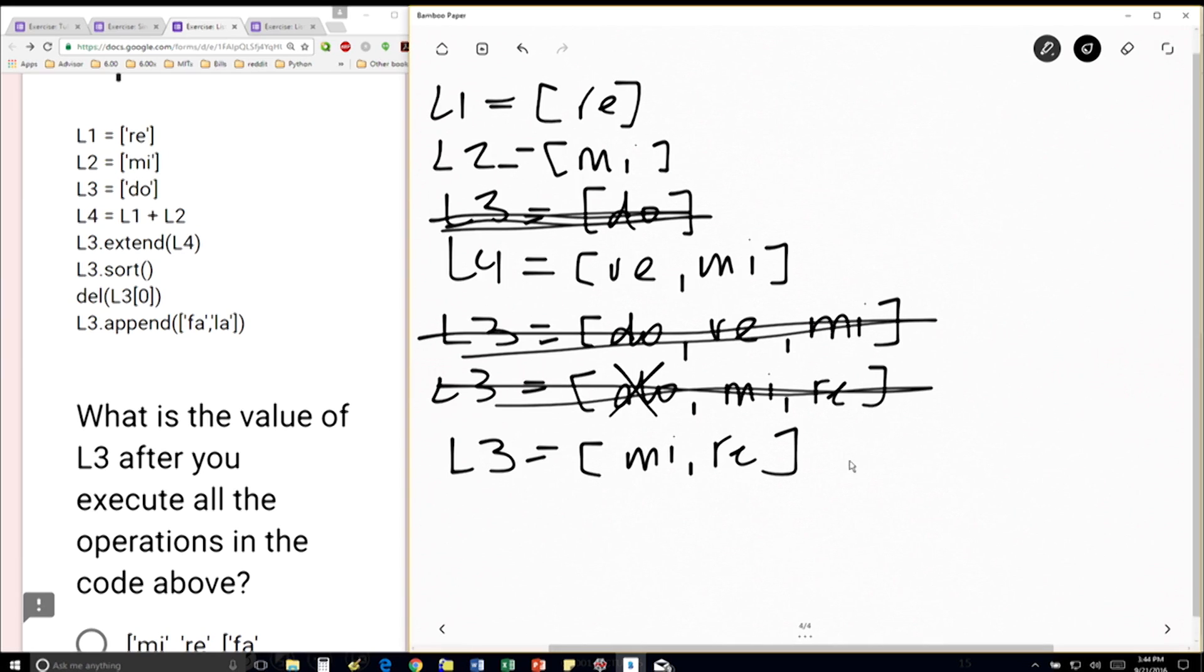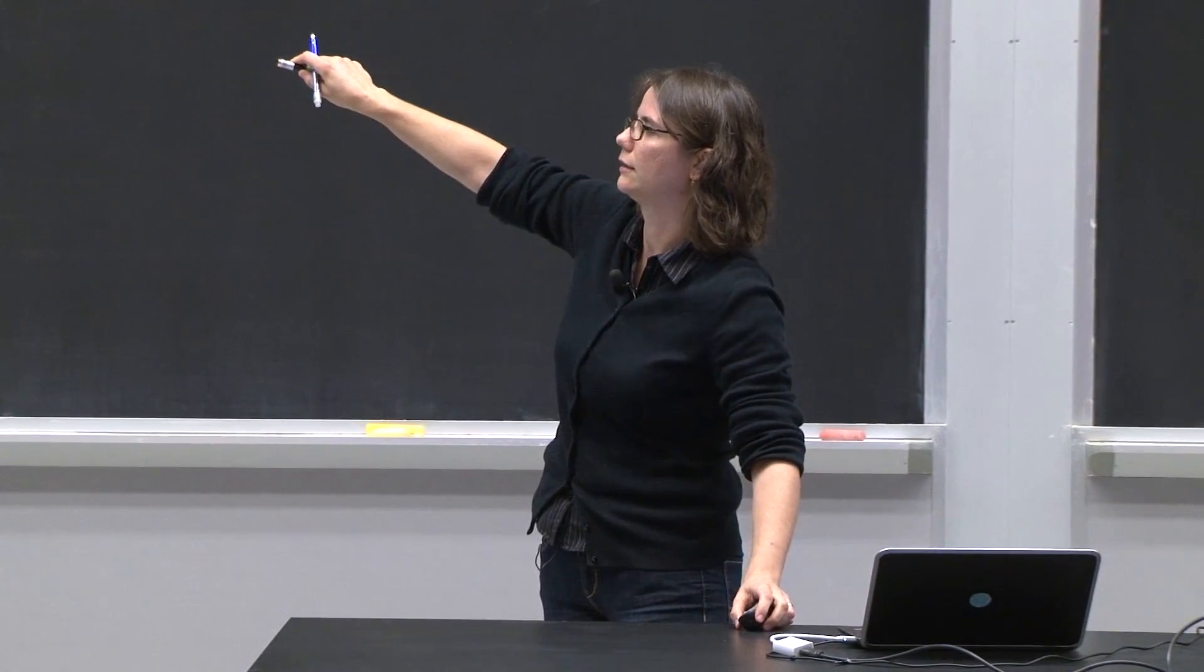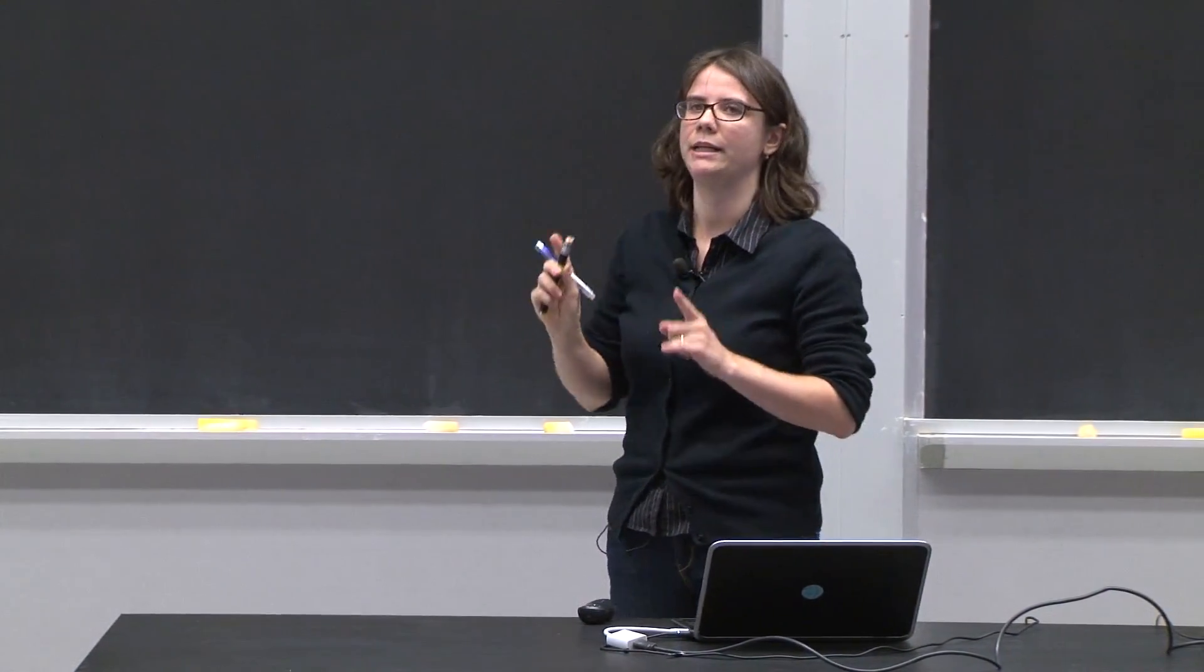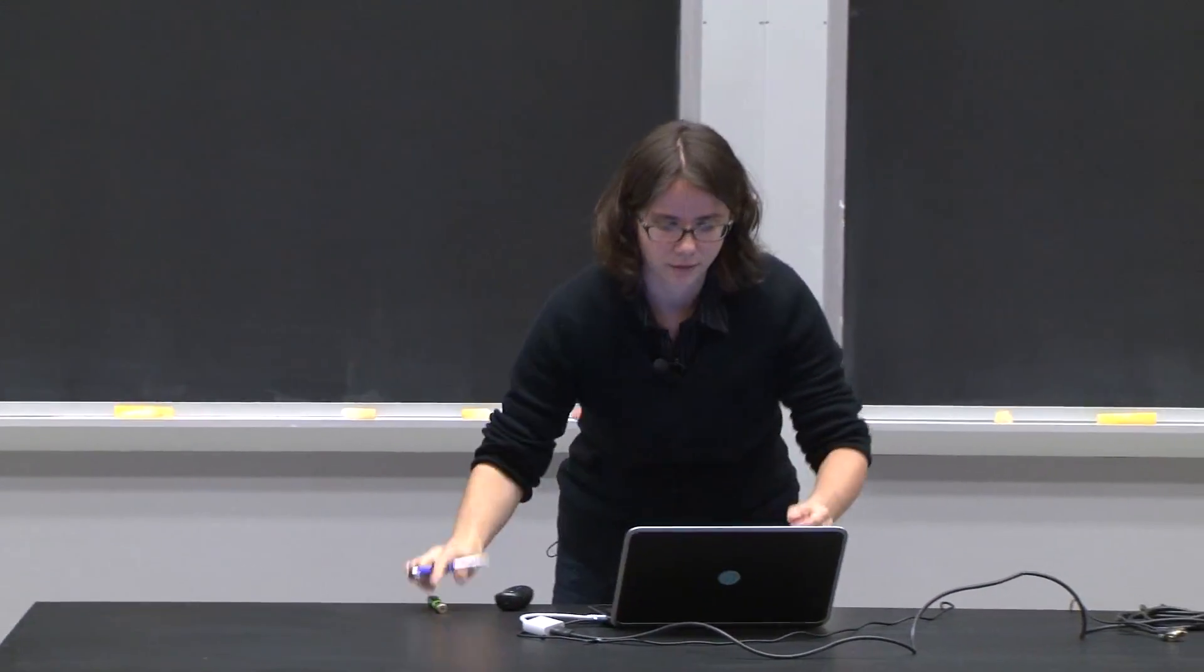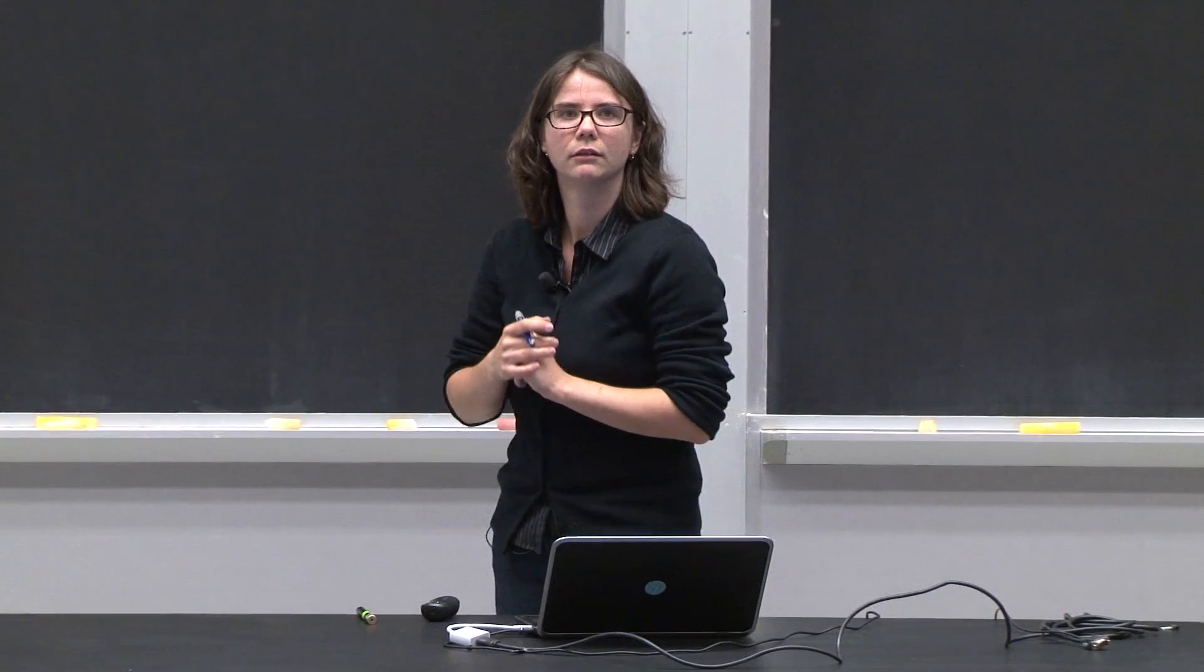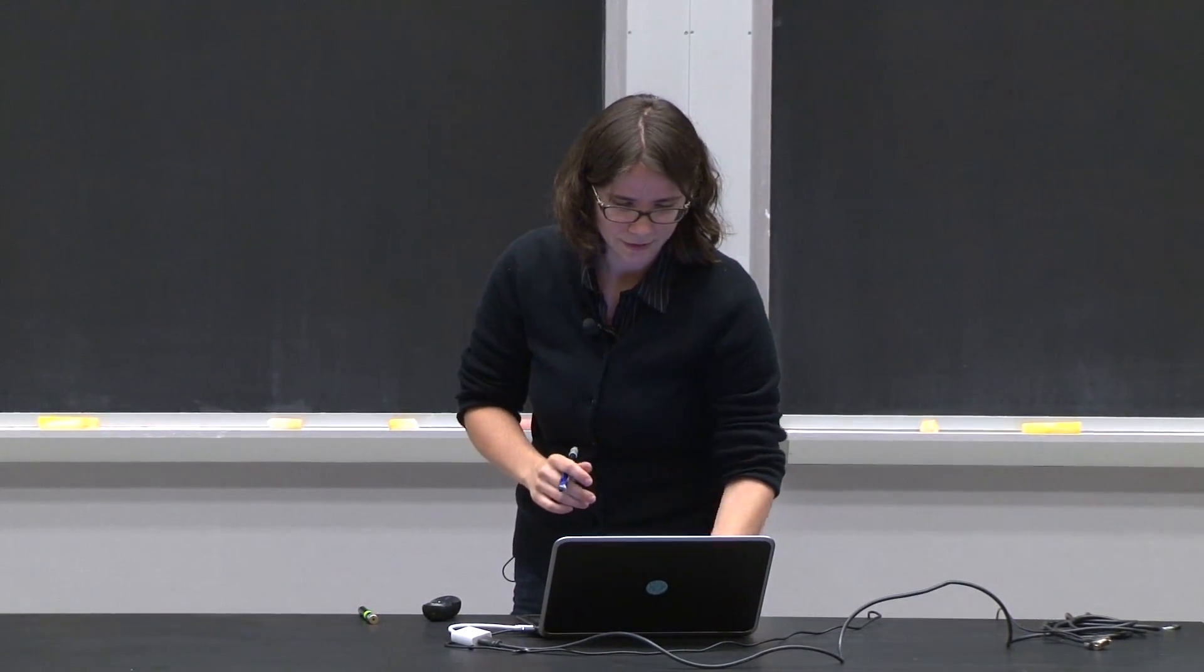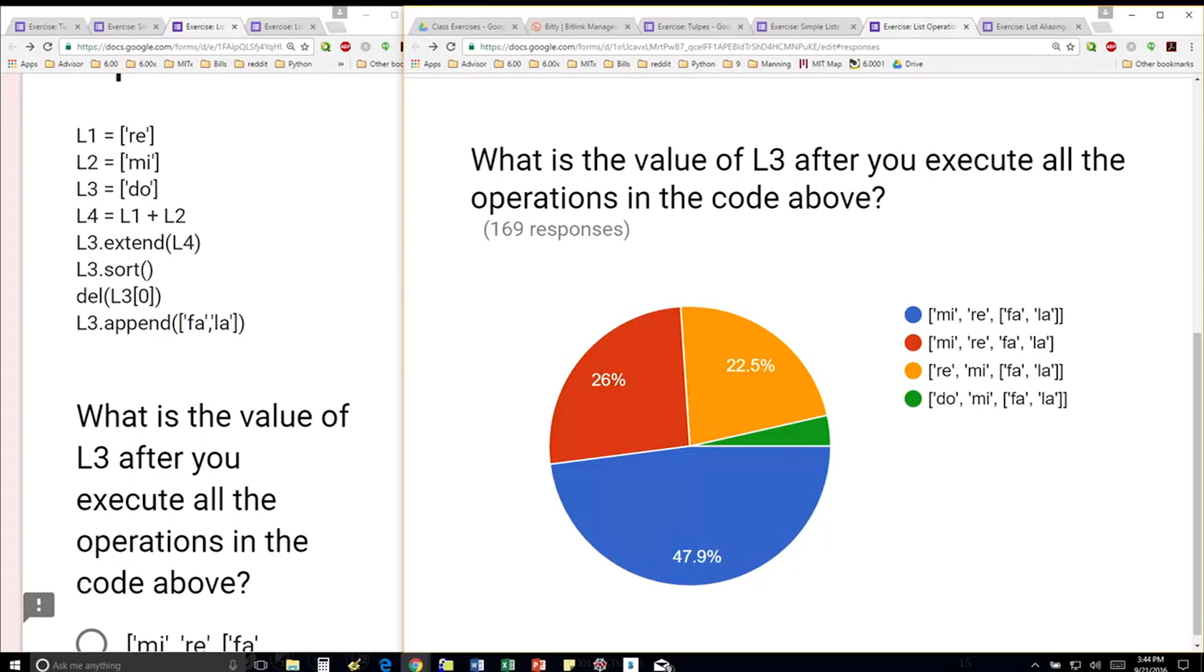And lastly, this is a tricky part, I'm going to append to my current L3, which looks like this, another list. So to L3, I'm appending another list. So this is going to be the list Fa, La. So Mi, Ray, and then the list Fa, La is the answer, which is red. No. Sorry, blue.